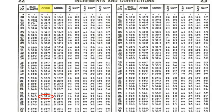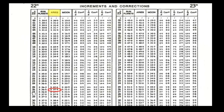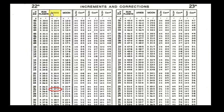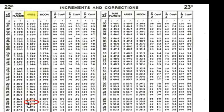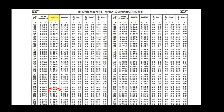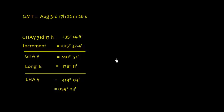Similarly, I look for the increment which was 22m 26s. So I need to see this Aries column, and here I see the increment which is 5° 37.4'. So we have this GHA 235° 14.6' and increment.